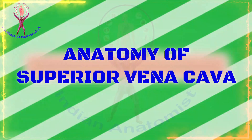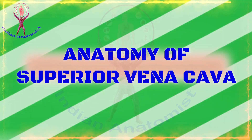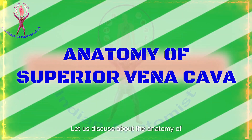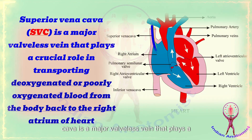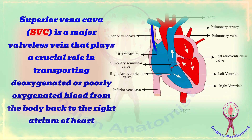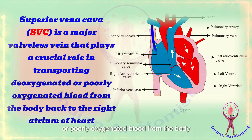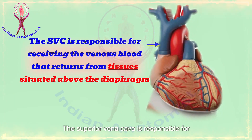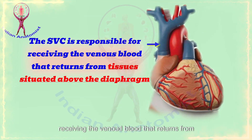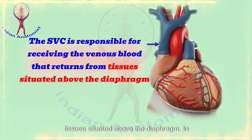Hello everyone, welcome to the Indian Anatomist channel. In today's topic, let us discuss about the anatomy of the superior vena cava. The superior vena cava is a major valveless vein that plays a crucial role in transporting deoxygenated or poorly oxygenated blood from the body back to the right atrium of the heart. The superior vena cava is responsible for receiving the venous blood that returns from tissues situated above the diaphragm.